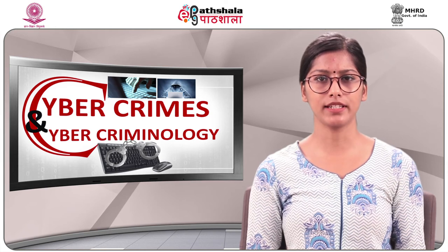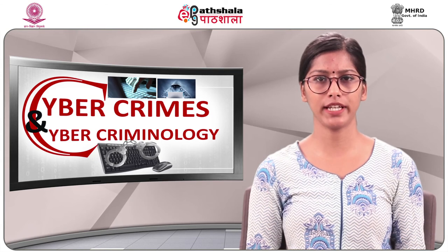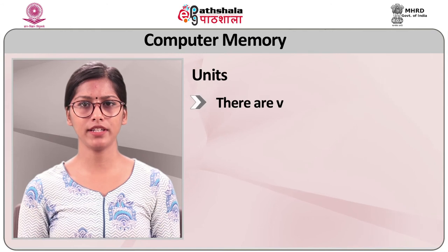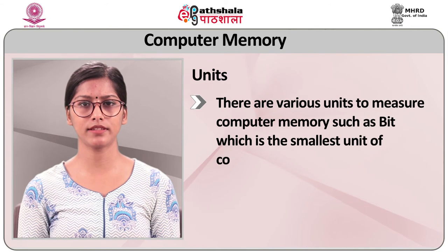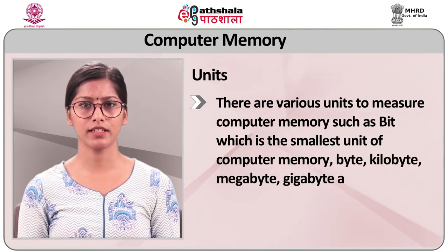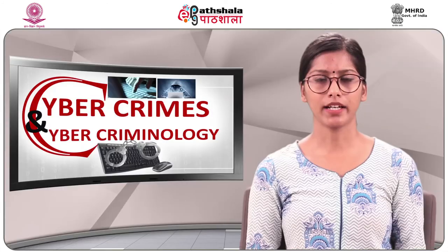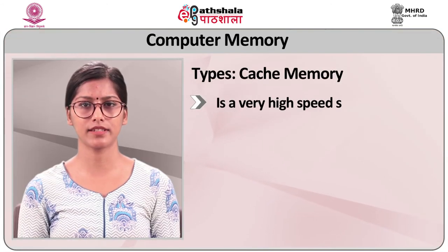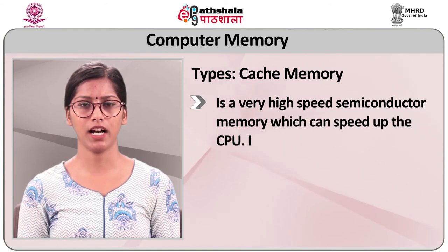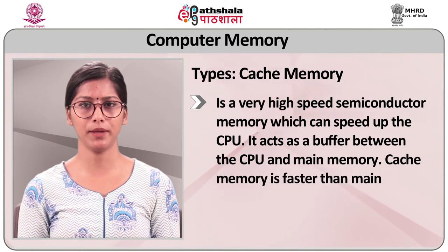Computer memory is an important part of the computer system and is required to store data and information. There are various units to measure computer memory: bit (the smallest unit), byte, kilobyte, megabyte, gigabyte, and terabyte. Computer memory is divided into three types. Cache memory is a very high-speed semiconductor memory that speeds up the CPU. It acts as a buffer between the CPU and main memory and is faster than main memory.